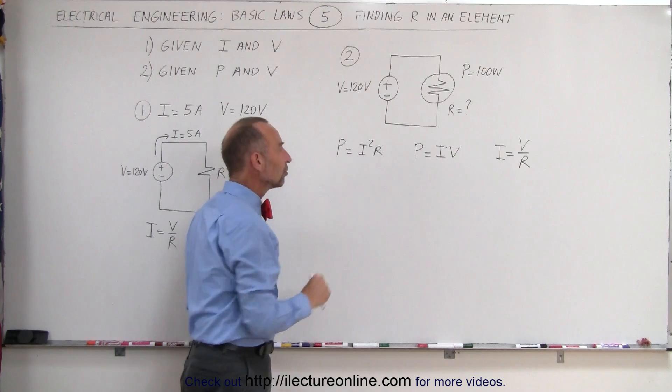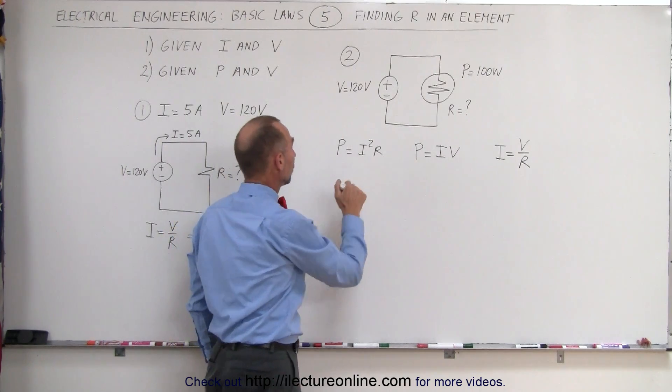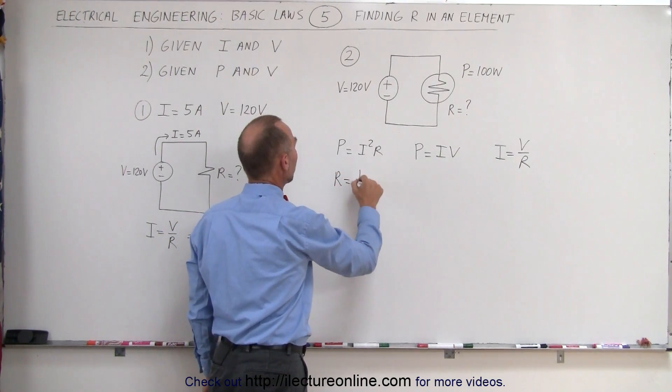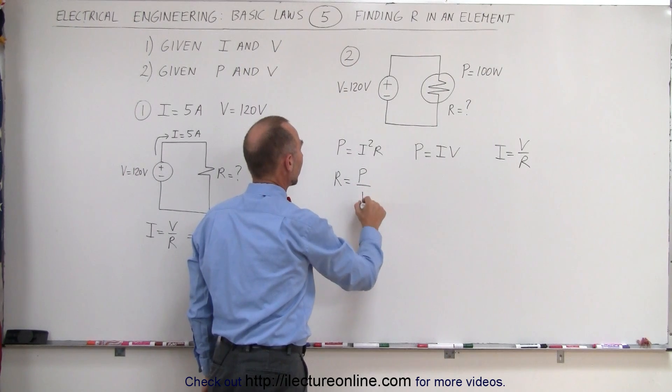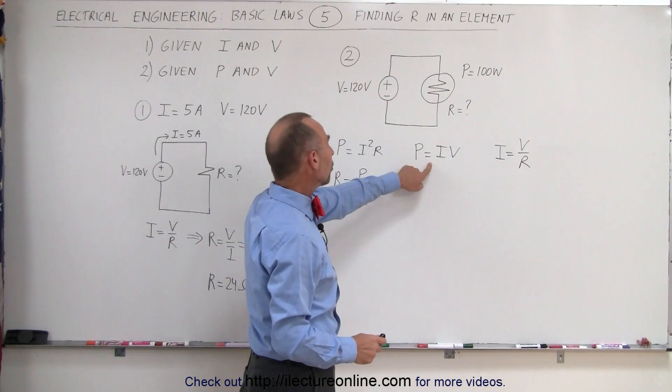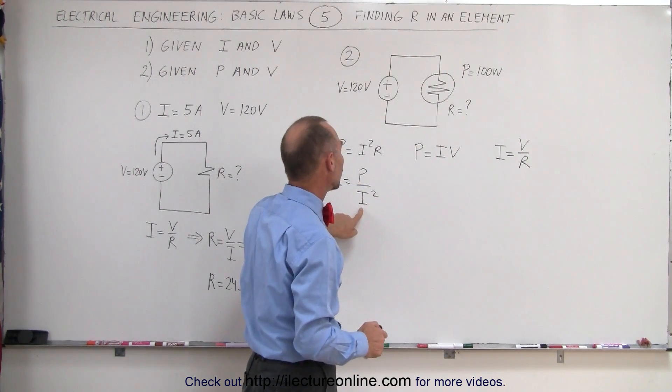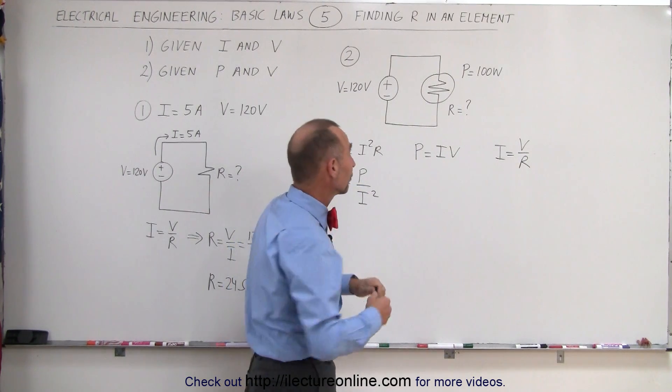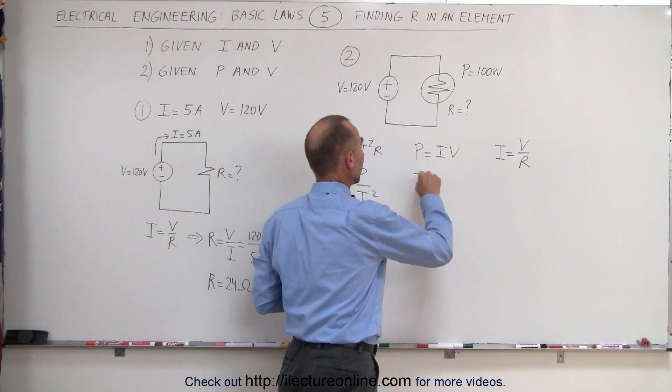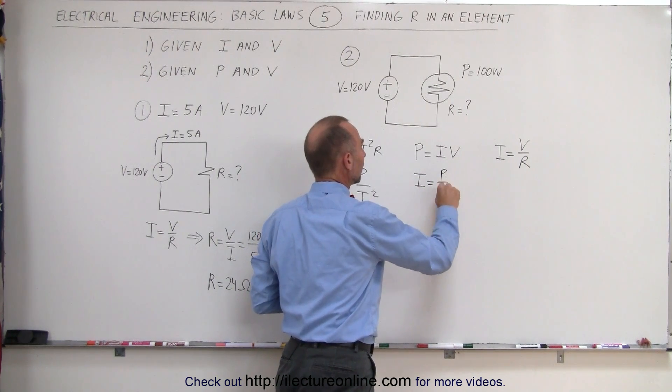Going to this first equation, let's solve this for R, so we get R equals the power consumed divided by I squared. We can use this equation to find the current, which we then plug into this equation. So solving that equation for the current, we can write I equals the power divided by the voltage.